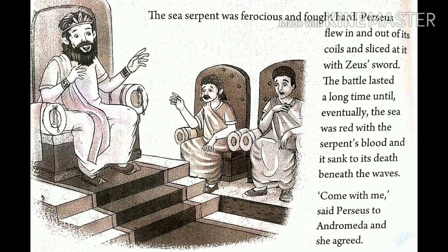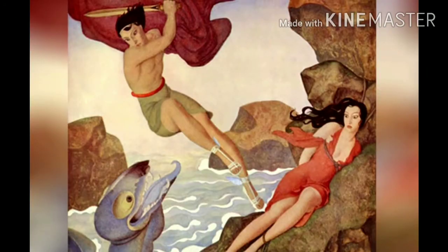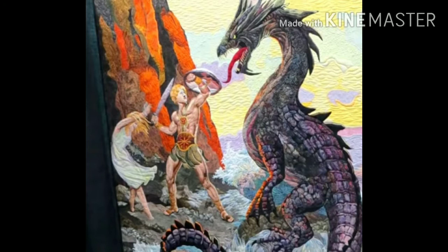The sea serpent was ferocious and fought hard. Perseus flew in and out of its coils and sliced at it with Zeus's sword. The battle lasted a long time until eventually the sea was red with the serpent's blood and it sank to its death beneath the waves. 'Come with me,' said Perseus to Andromeda, and she agreed. The sea serpent was very ferocious and it was very difficult for even Perseus to defeat it. The battle lasted a long time, but Perseus had the sword of Zeus, with which he sliced the sea serpent's body. Perseus killed the sea serpent and told Andromeda to come with him, and finally Andromeda accepted.